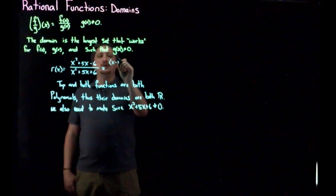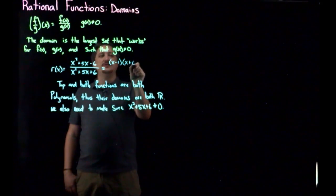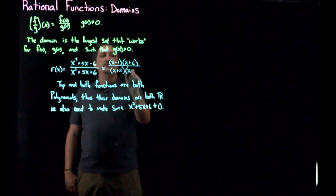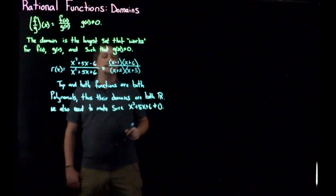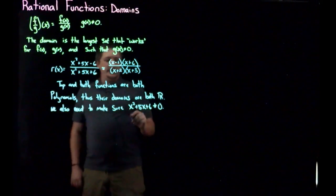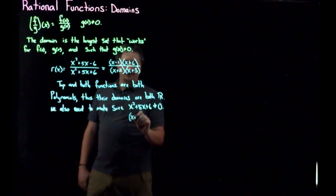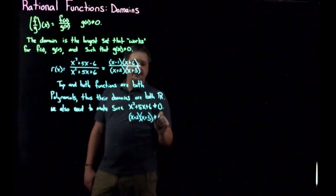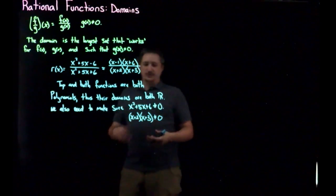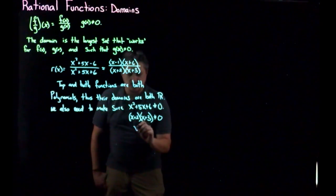So you're going to get x minus 1 times x plus 6 in the top, and then x plus 2, x plus 3 in the bottom. So in particular, the bottom then, x plus 2, x plus 3, we want that that is not zero. Which means this, again, the way you do this is you find out where it is zero, which is going to be when x is negative 2 and x is negative 3.